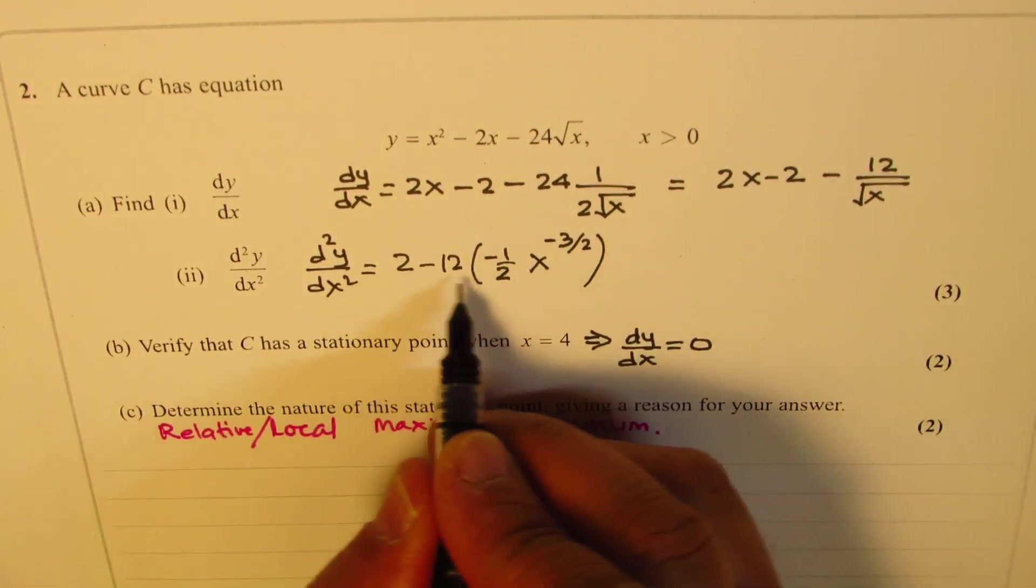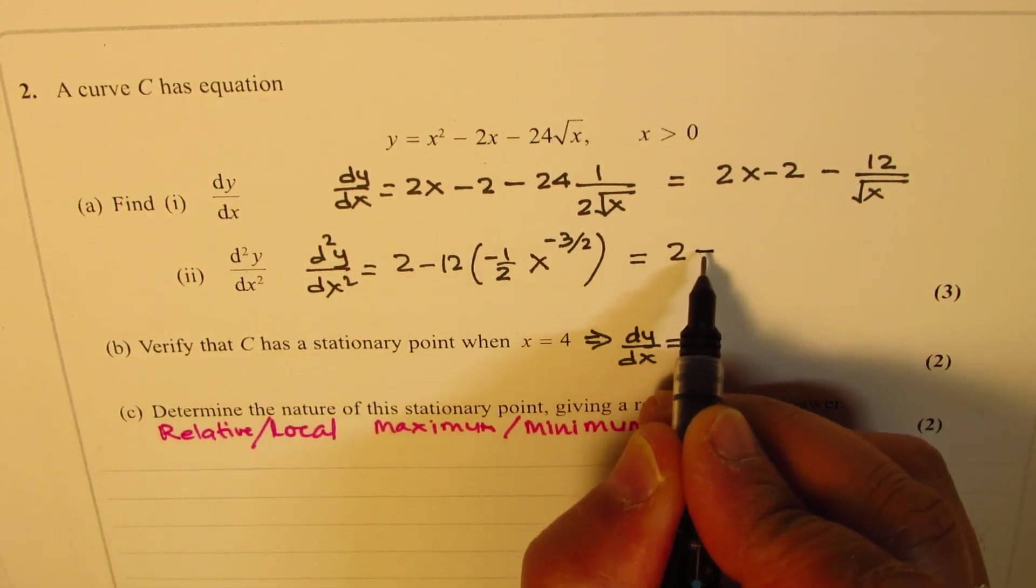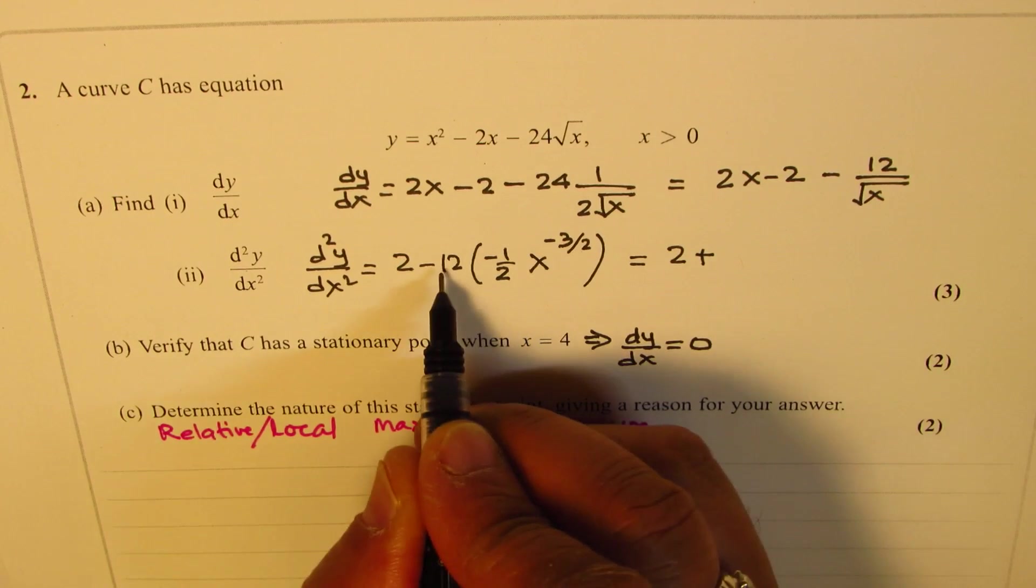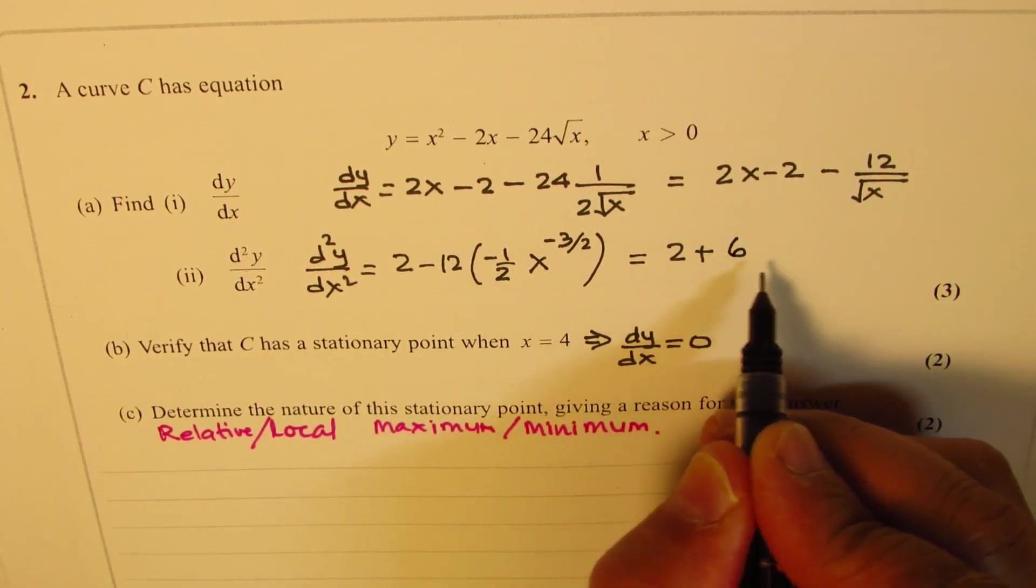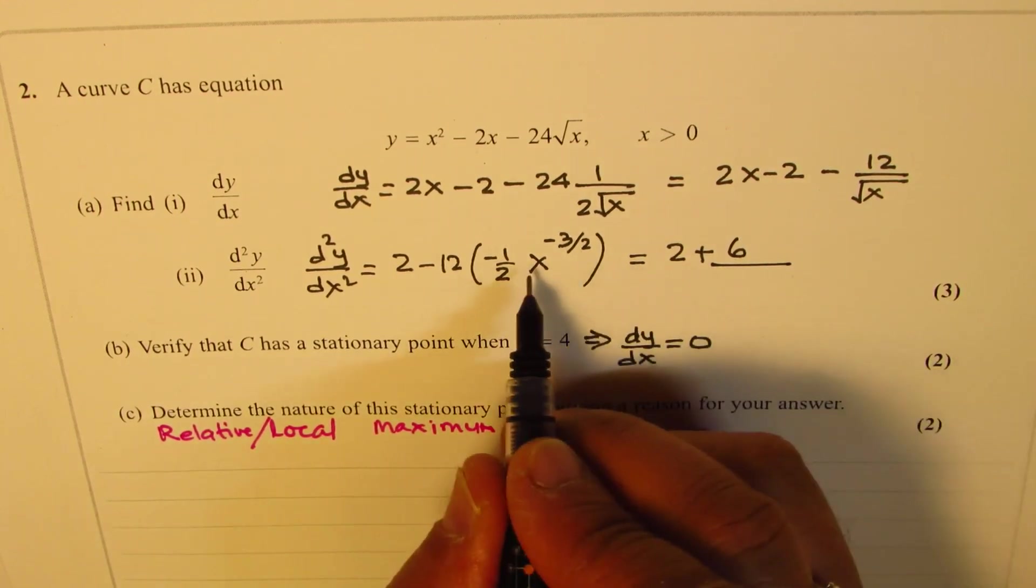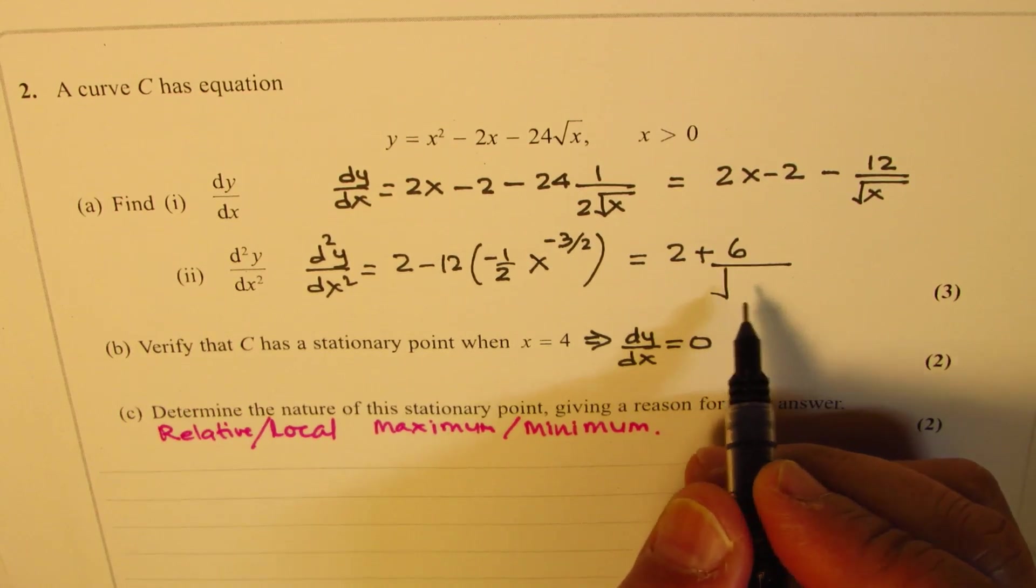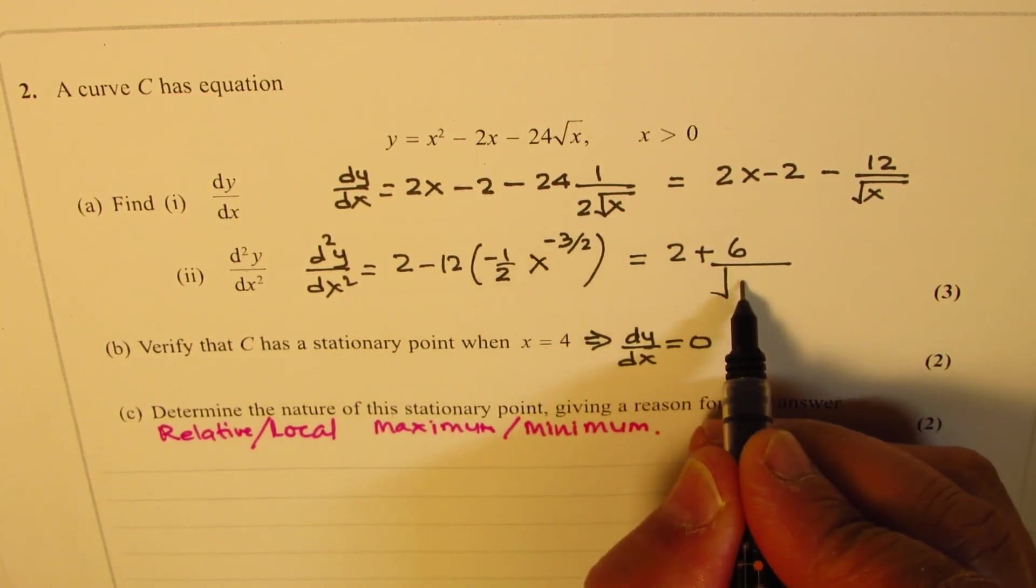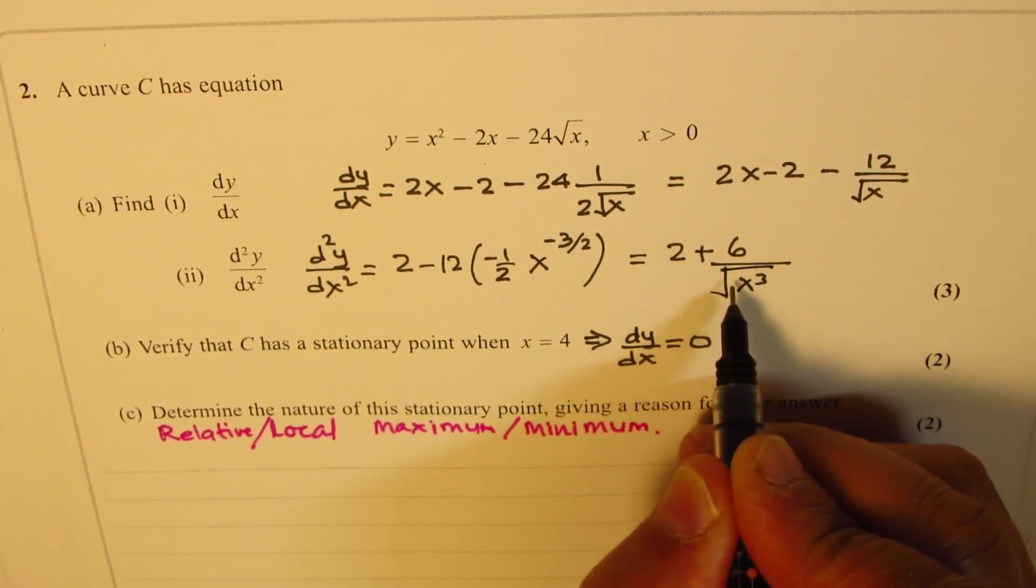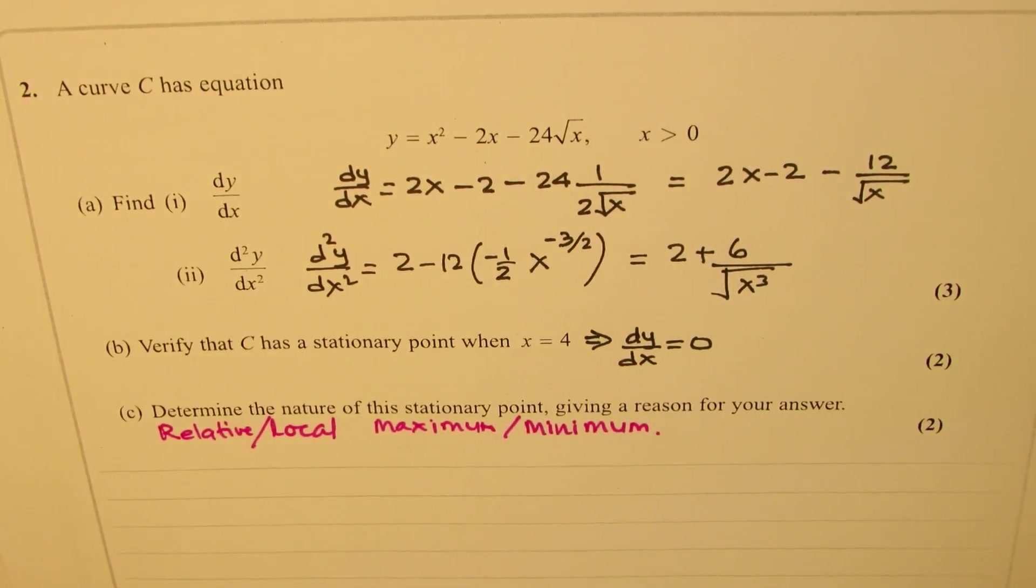So when you open this bracket, you get 2. Minus minus becomes plus, half divided into 12 is 6 times, and we have x to the power of - minus means you have to write in the denominator - so we have x to the power of 3 square root. So that is your second derivative.